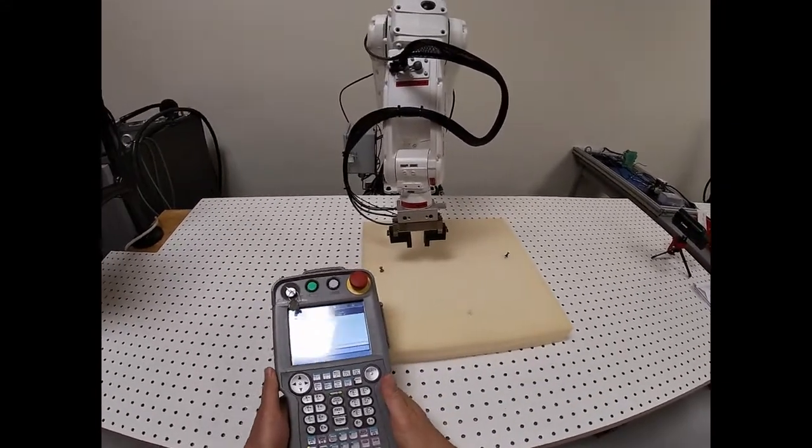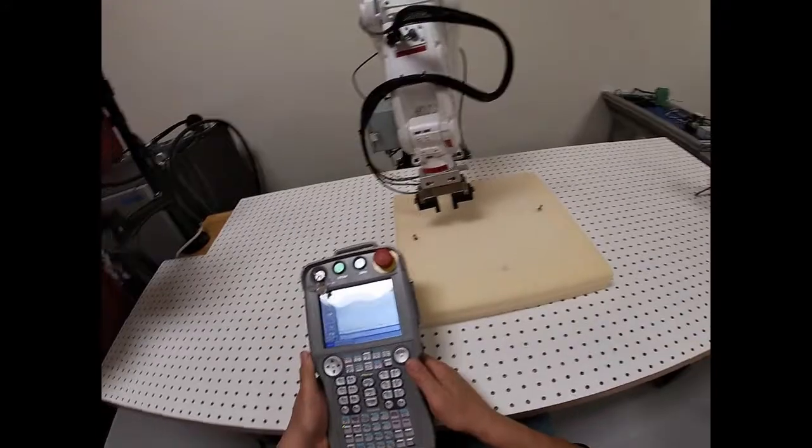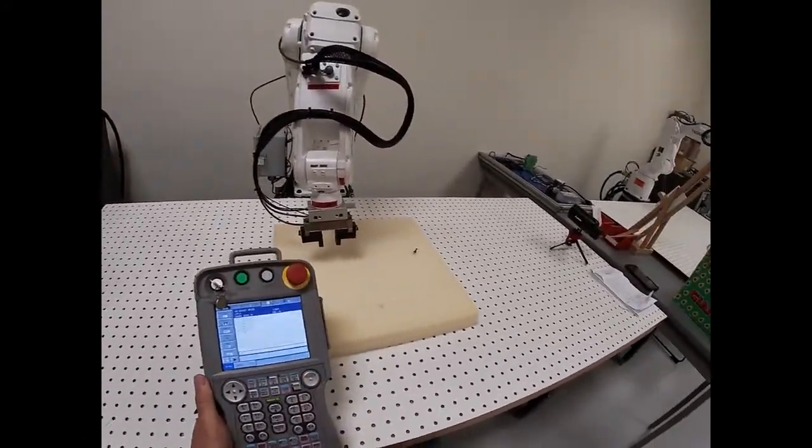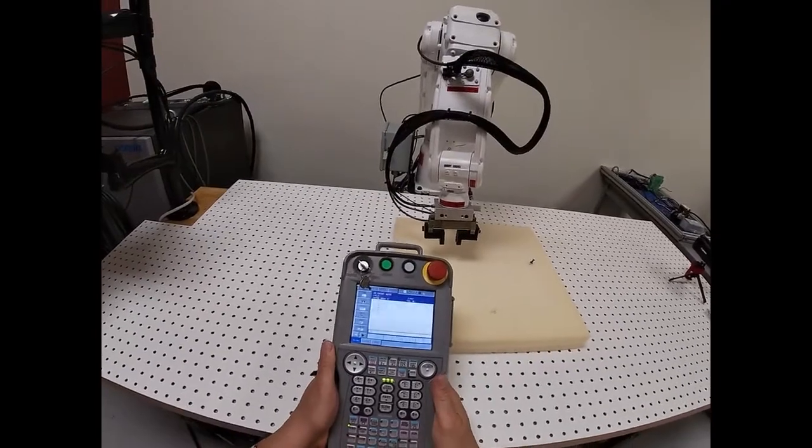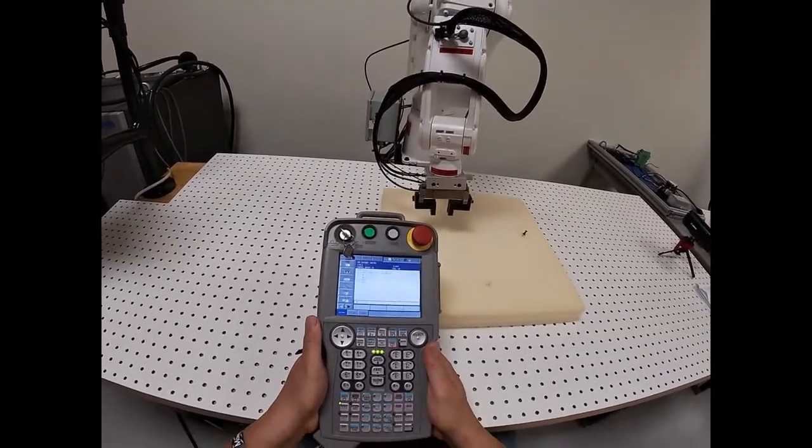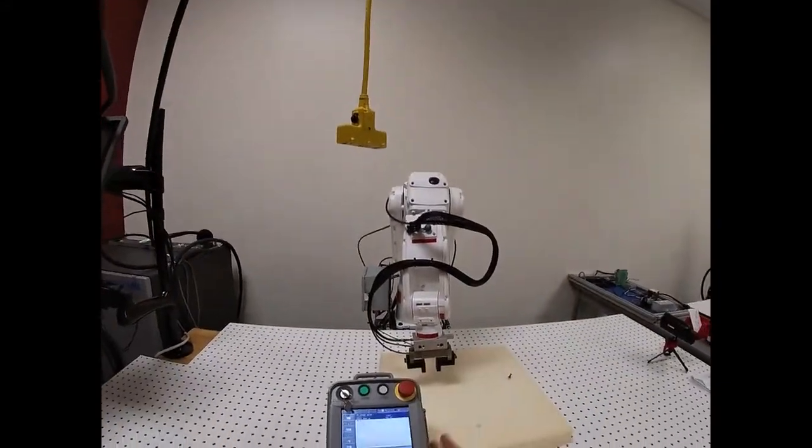The first thing you want to do is, generally speaking, I like to move the robot to where its first point is going to be. Now I always like to start the robot off in second home position. So what I want to do is move my robot to second home position.